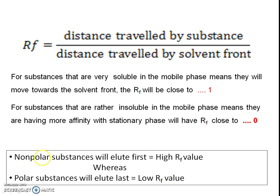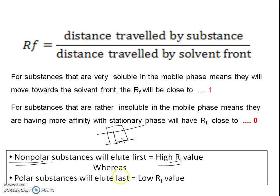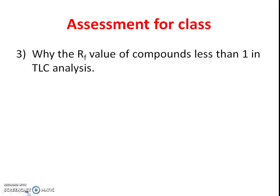Non-polar substances move towards the solvent front and have a higher RF value, whereas polar compounds have more affinity for the stationary phase and therefore a lower RF value. Third assessment question: why is the RF value of compounds always less than 1 in TLC analysis?